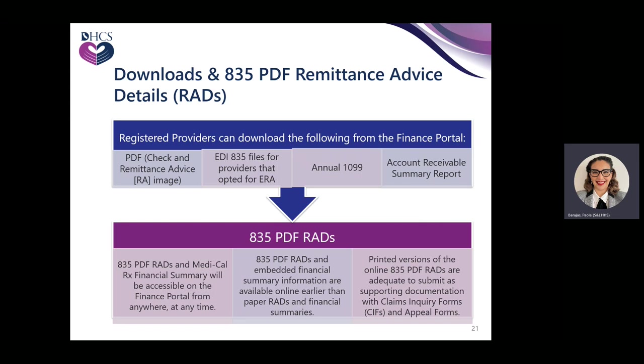Those with access to the Finance Portal can obtain copies of PDF versions of checks and RA images, EDI 835 files, annual 1099s, and account receivables. 835 PDF RAD summaries will be accessible in the Finance Portal. Online versions are available much quicker than paper RADs, and printed versions are adequate to submit as supporting documentation with a claims inquiry or appeal form.